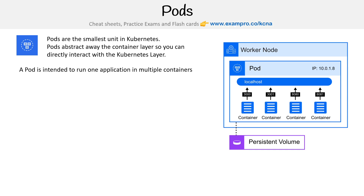Here is that graphic. A pod is intended to run one application in multiple containers. Notice down below that we have one, two, three, four containers — they're all running the same app over and over again. The idea here is a pod would be a database pod, a job pod, a front app pod, a backend pod.